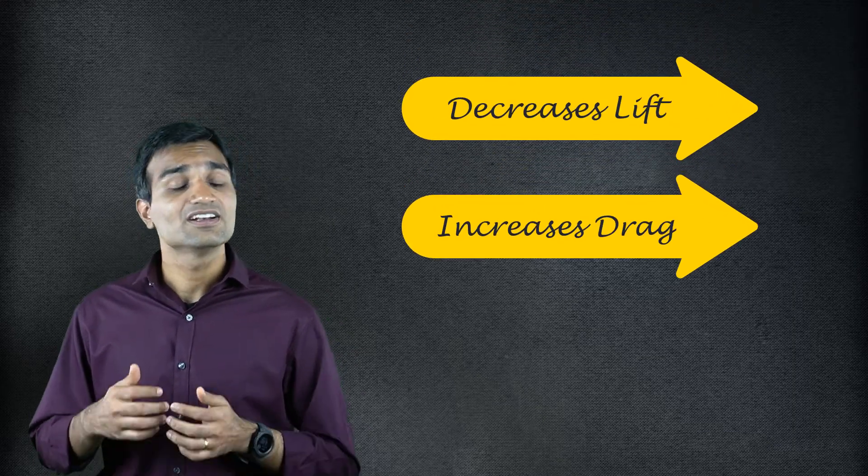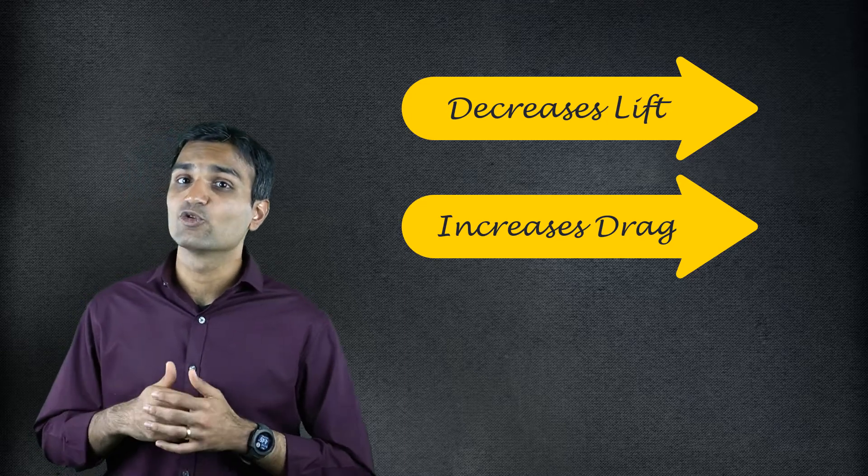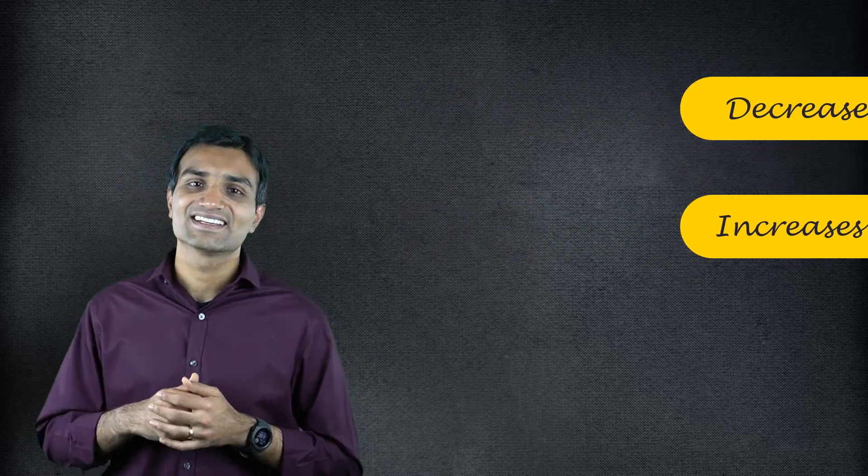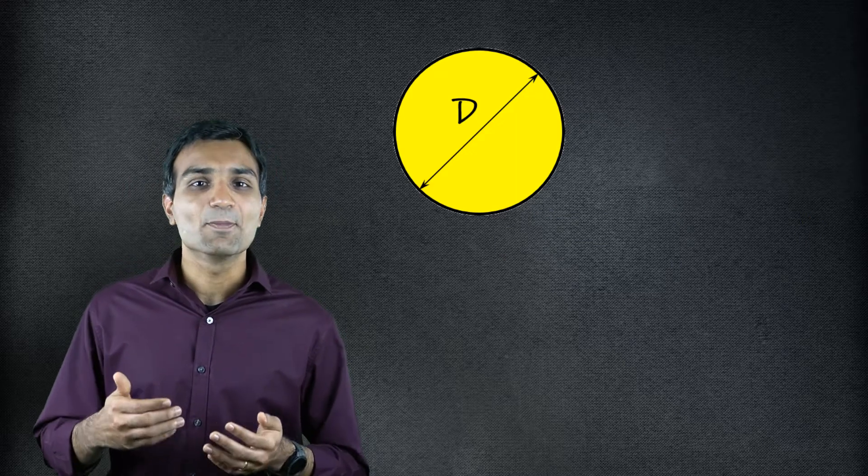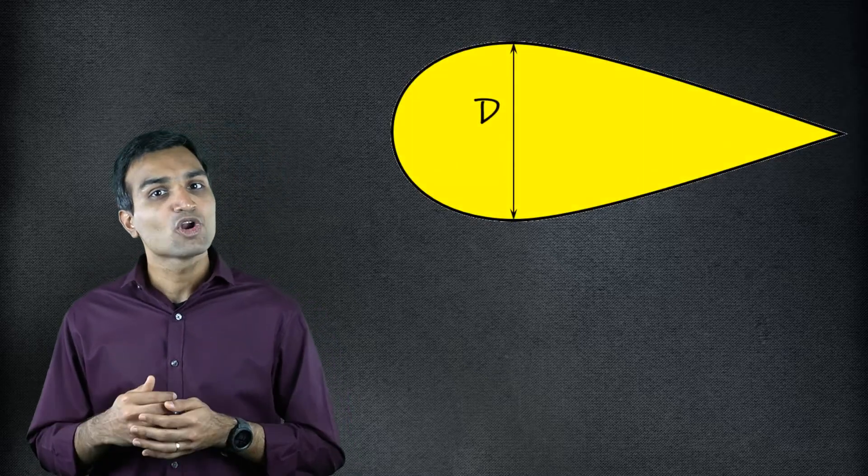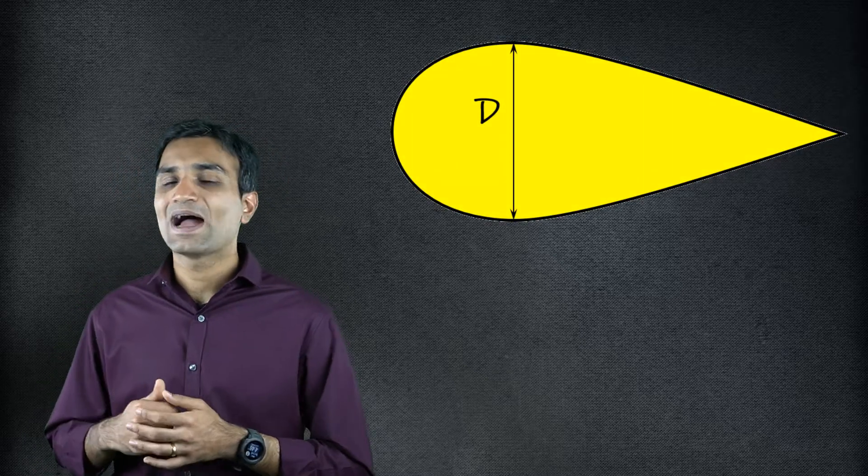From an engineering perspective, in external flows, flow separation is detrimental to both lift and drag forces. It decreases lift and increases drag. Streamlining a body helps delay this flow separation and streamlined bodies are employed in most external flow applications.